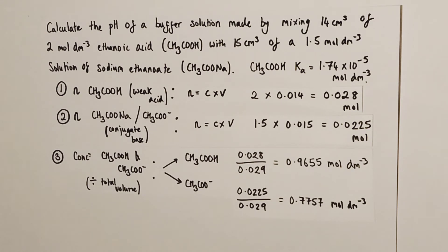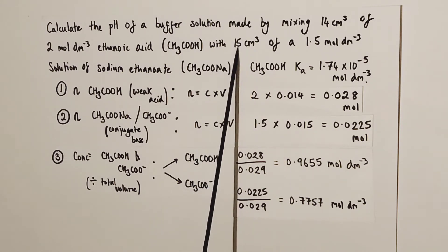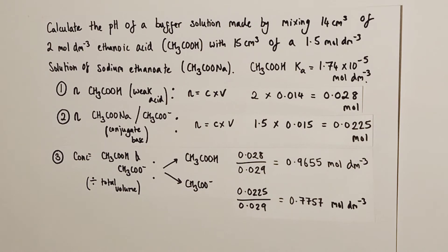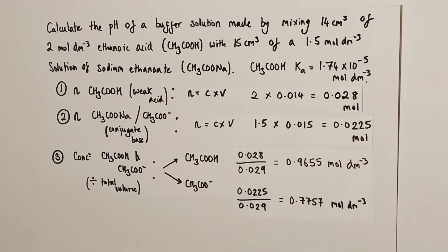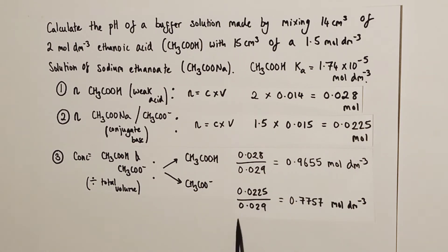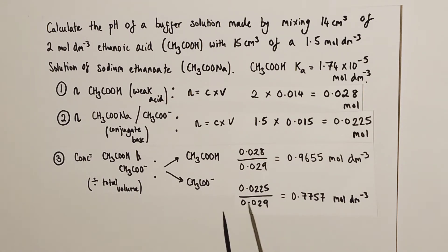The Ka expression works with concentrations, not moles, so we must work out the new concentration of ethanoic acid and ethanoate ions after mixing. We divide moles by the total volume: 14 + 15 = 29 cm³ or 0.029 L. Ethanoic acid: 0.028 ÷ 0.029 = 0.9655 mol/L. Ethanoate ions: 0.0225 ÷ 0.029 = 0.7757 mol/L. These are our new concentrations in the buffer solution after dilution.